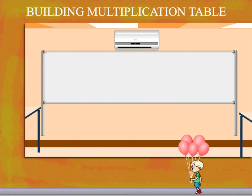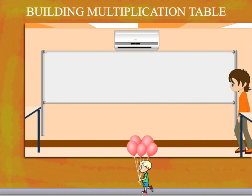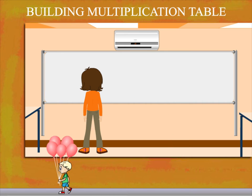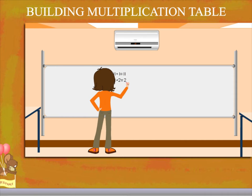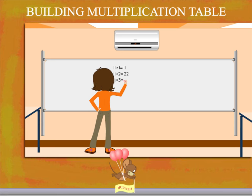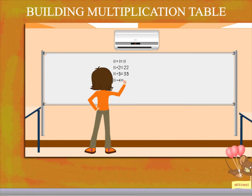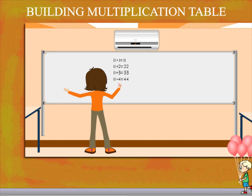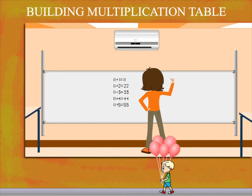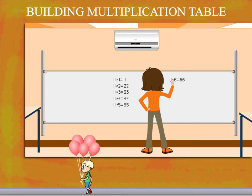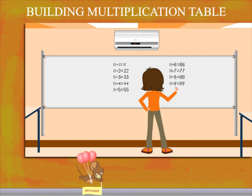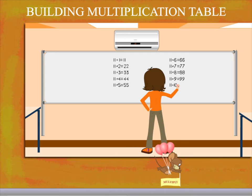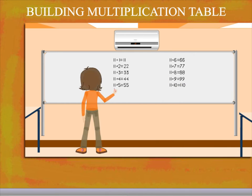Building Multiplication Table. Babli is here in class and writes the tables of 11. So, 11 1s are 11, 11 2s are 22, 11 3s are 33, 11 4s are 44, 11 5s are 55, 11 6s are 66, 11 7s are 77, 11 8s are 88, 11 9s are 99, 11 10s are 110. Smart work!